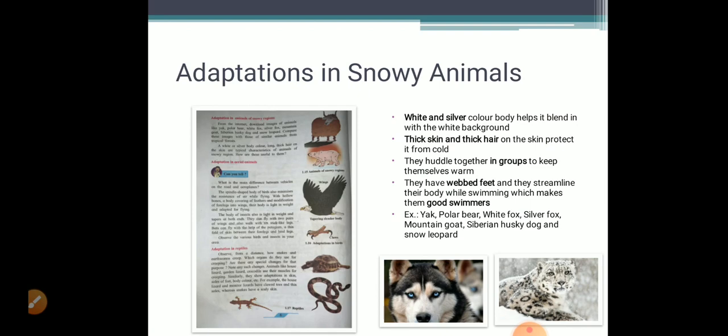Thick hair on their skin are typical characteristics of the animals of the snowy region. They huddle together in groups to keep themselves warm so that there is less loss of heat. They have webbed feet and they streamline their body while swimming which makes them good swimmers. For example, the penguins. Here there are some examples like the yak, the polar bear, the white fox, silver fox, mountain goat, Siberian husky dog and the snow leopard.